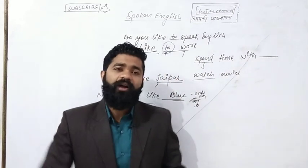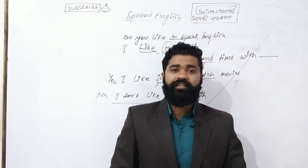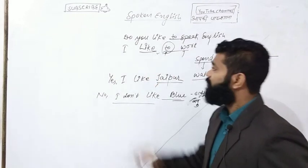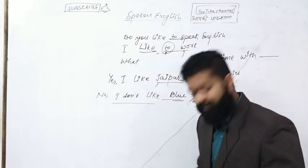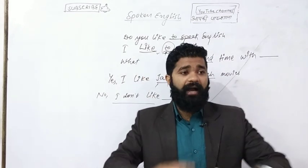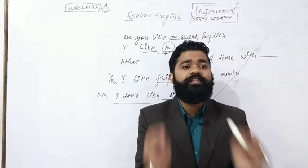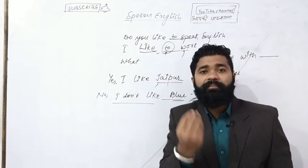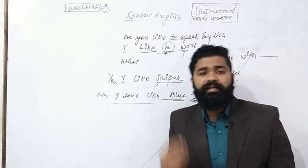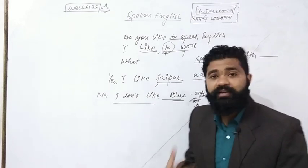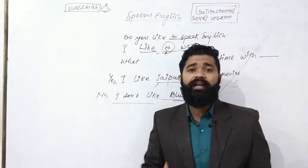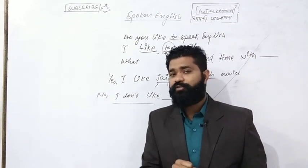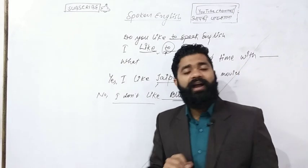यह chapter बहुत ही आसान है. अब जो chapter पिछले video में आपने सीखा था — 'what' के बारे में — उससे हम सवाल बनाते हैं. अगर आप option दे कर पूछना चाहते हो — Do you like apple? Do you like banana? Do you like pink color? Do you like English subject? Do you like economics? Do you like biology? लेकिन अगर option नहीं देना है और सीधा पूछना हो कि आपको क्या पसंद है, तो 'what' का question बनेगा.